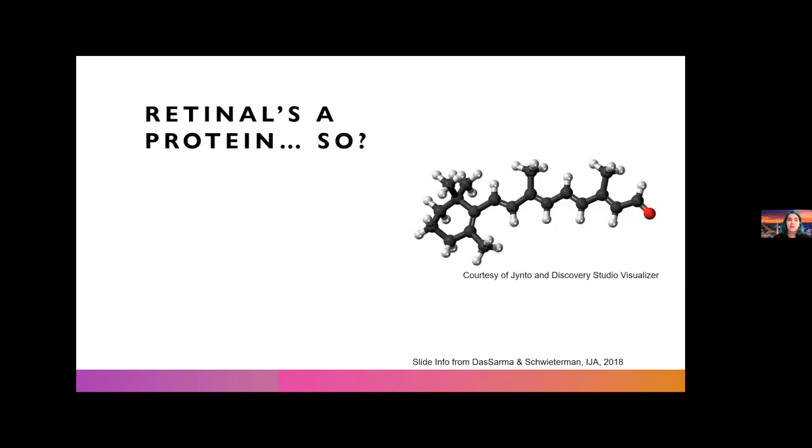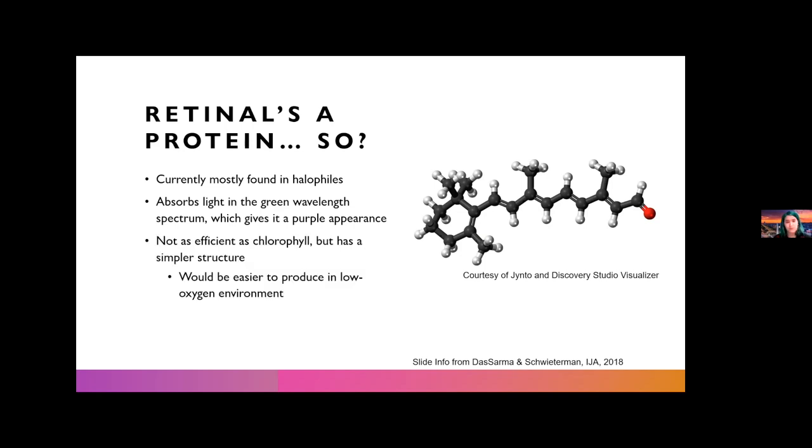Now talking a bit more about retinal, we know it's a protein and it's currently mostly found in halophiles, as we saw in the salt lake in the previous slide. It absorbs light in the green wavelength spectrum, which gives it a purple appearance because it reflects the light that it doesn't absorb. An interesting fact is that it's not actually as efficient as chlorophyll, which would explain why chlorophyll is so much more prevalent nowadays.